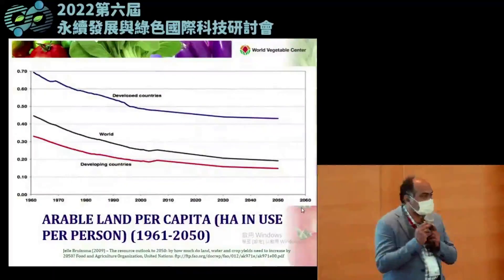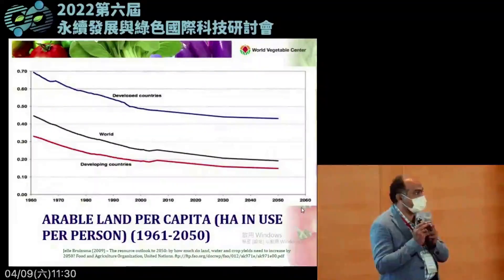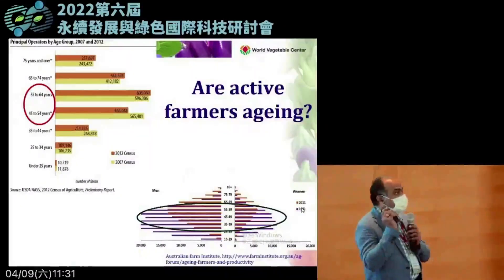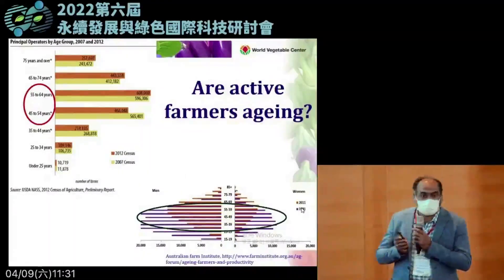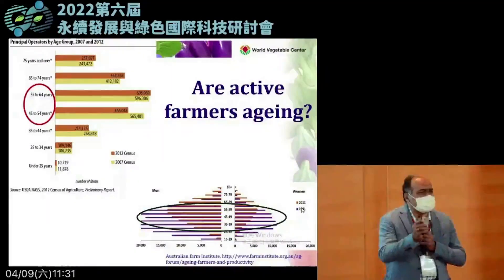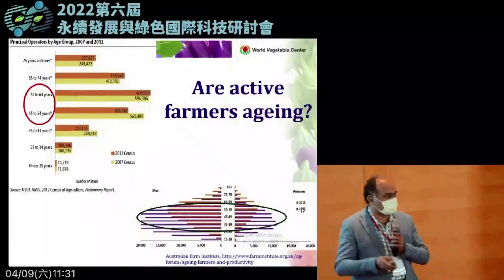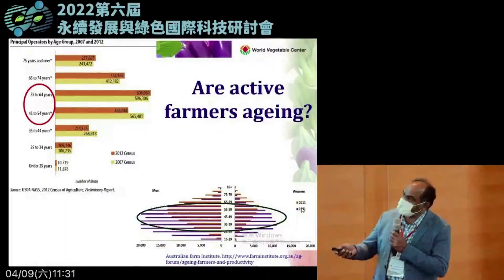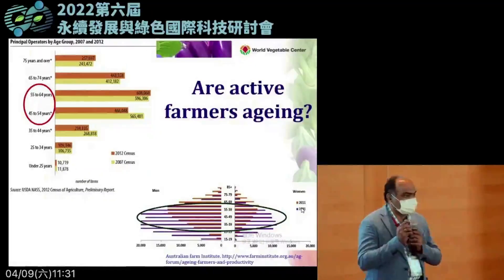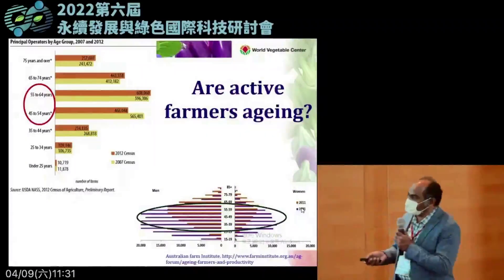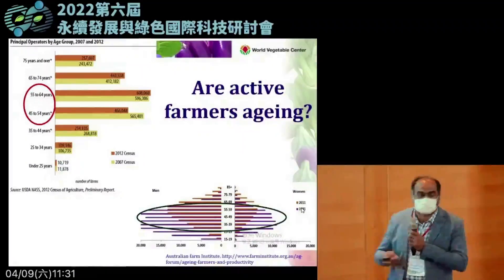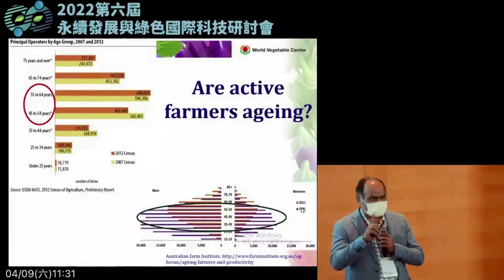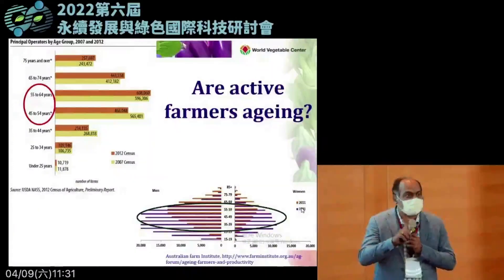Agriculture has to compete with urbanization and industrialization for land allocation, resulting in a significant decline in land availability. Perhaps the most important challenge is who is actively doing farming. In the USA and Australia, as well as in developing nations like India, the majority of farmers are between the ages of 45 to 65 — they are not youths. In Australia most farmers are between 35 to 60 years old.